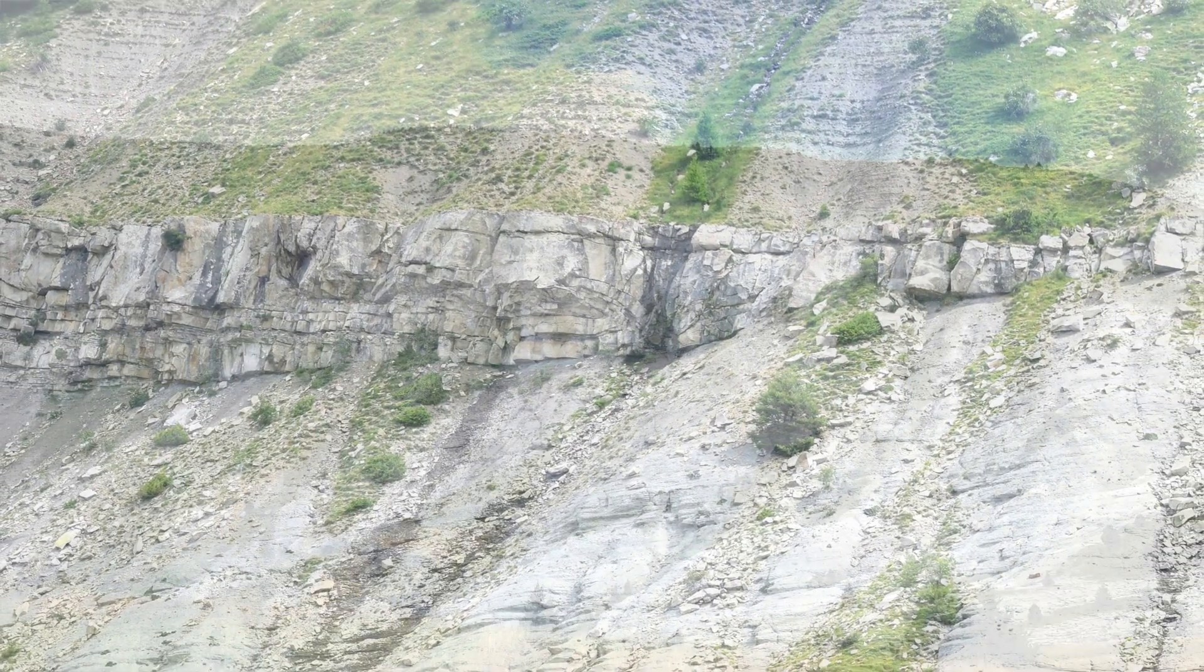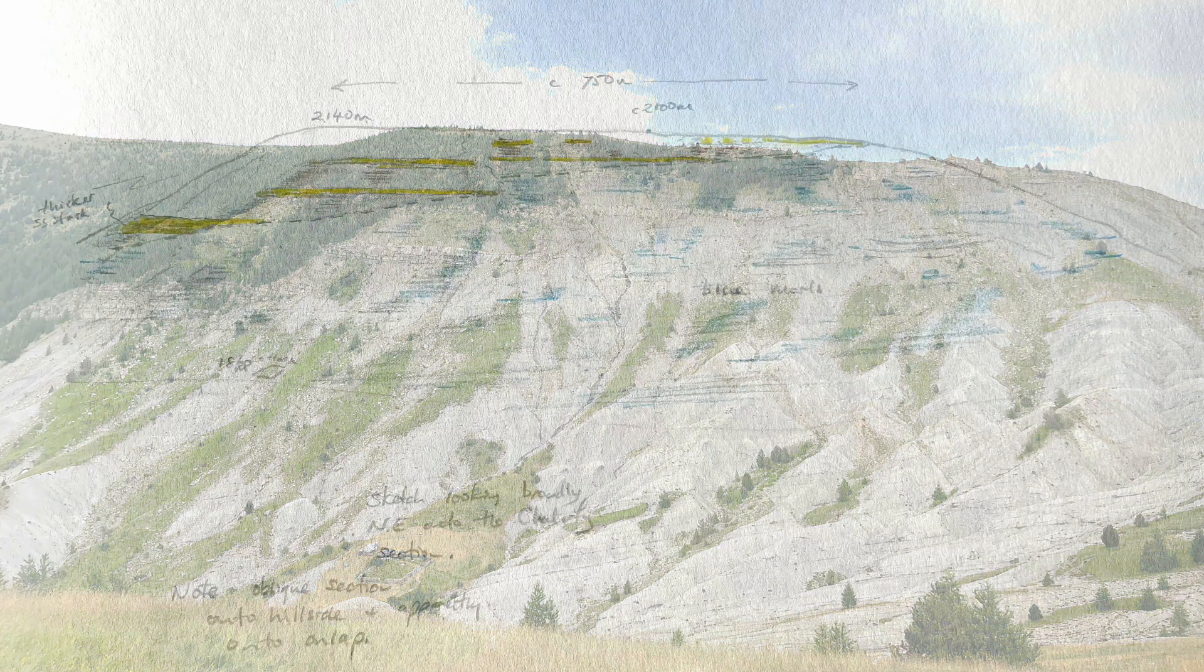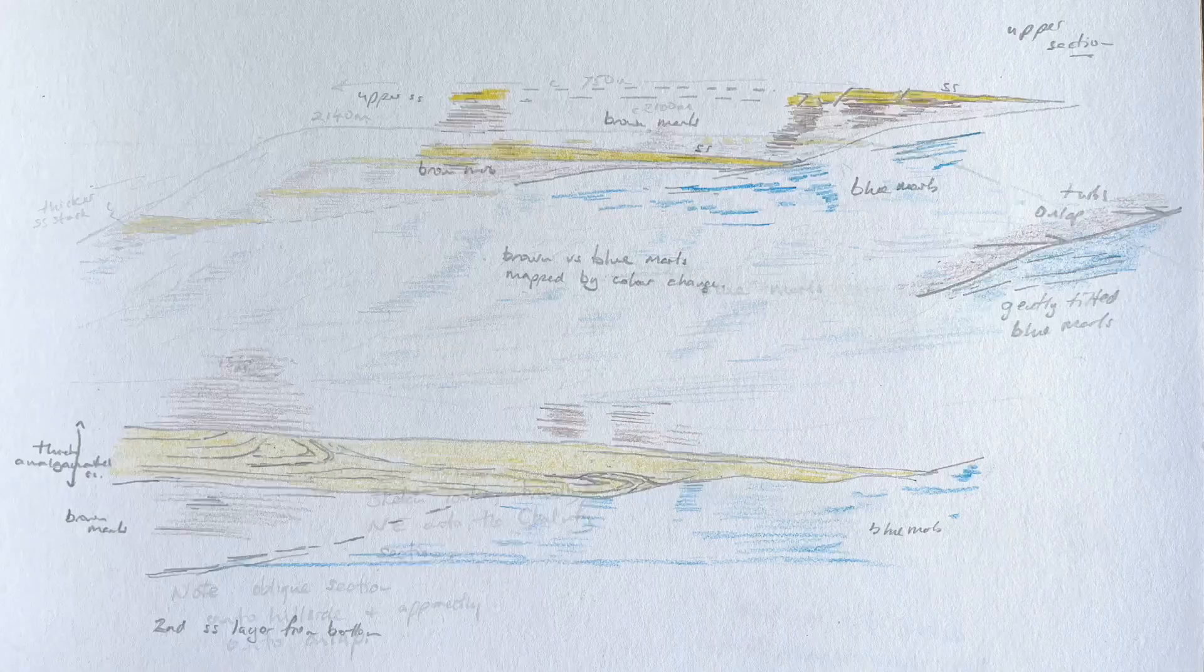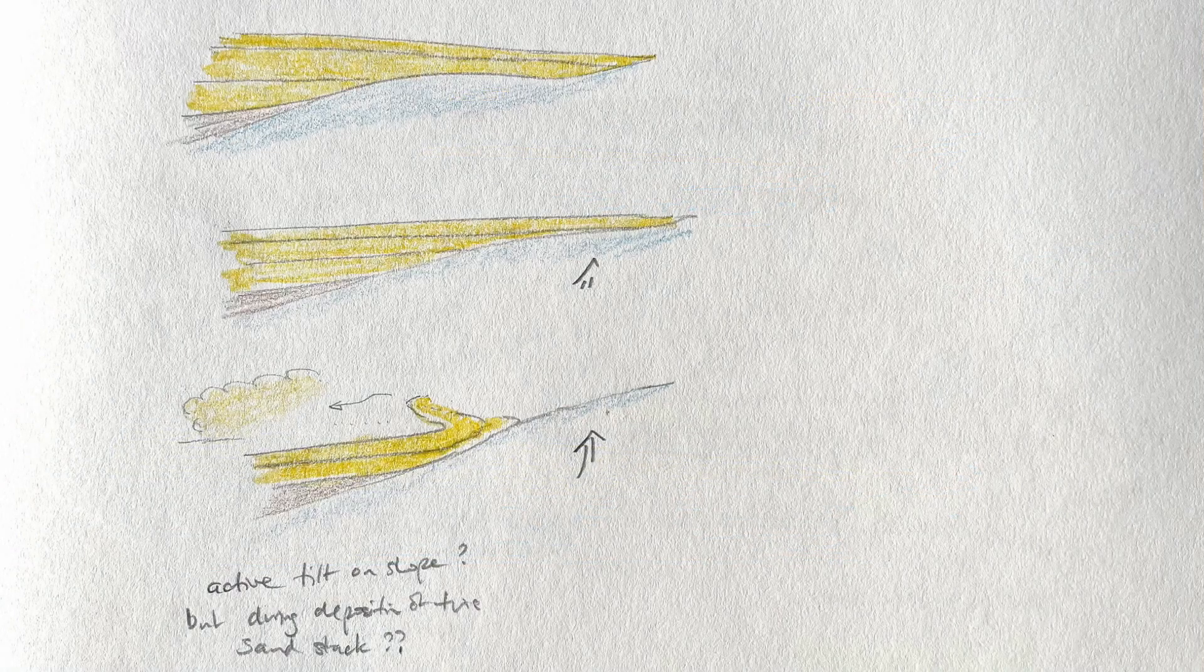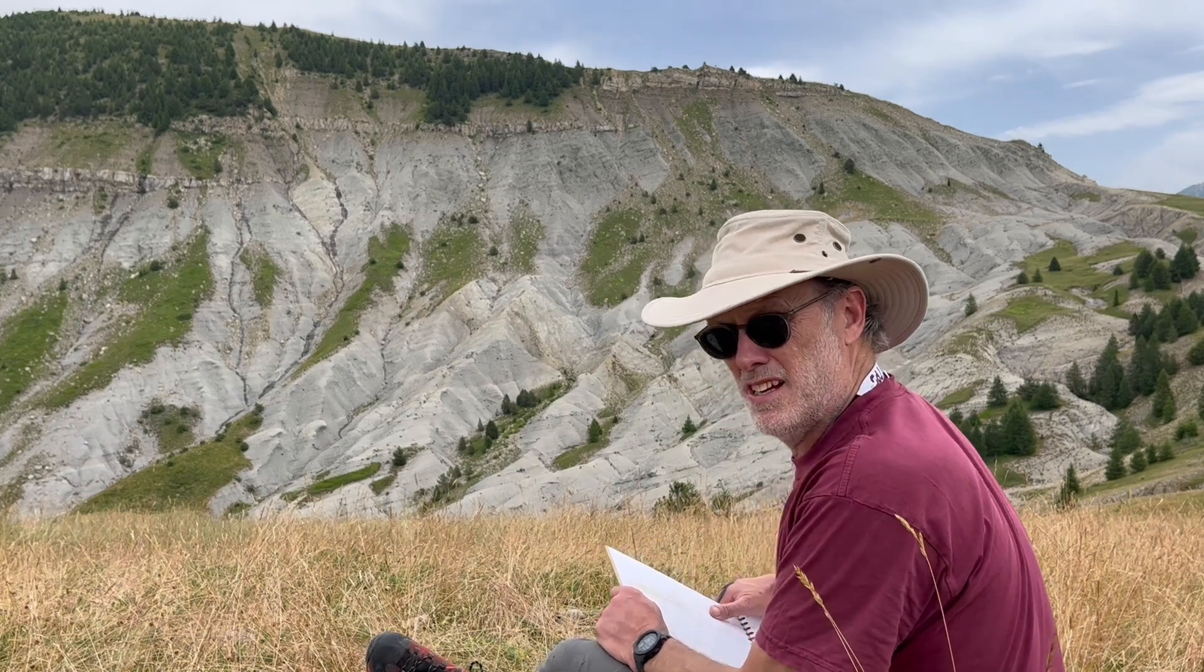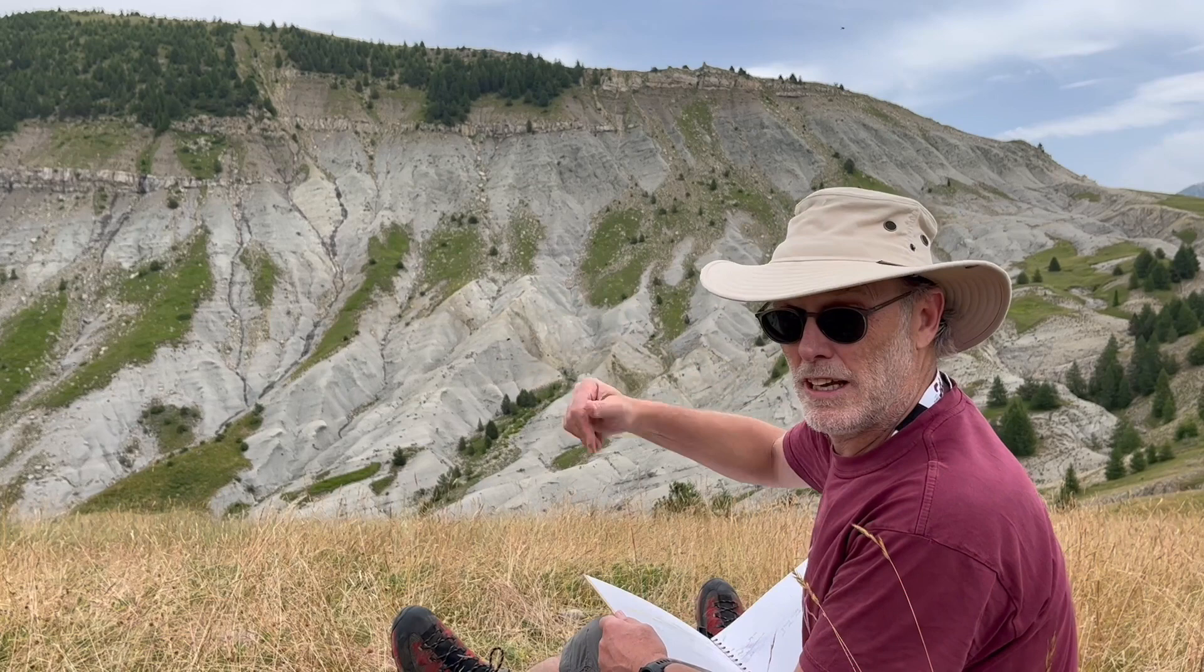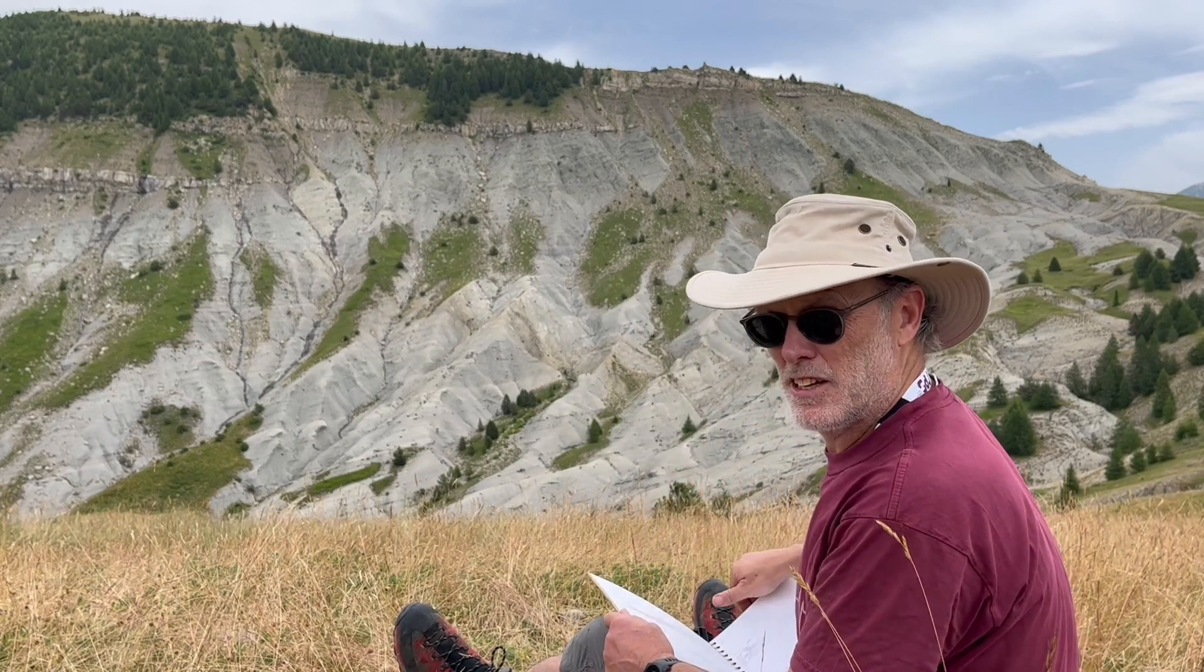So overall, deposition of turbidites up against a paleo slope. So these are the outcrop sketches that capture the critical geometries. Well that's some pretty spectacular lateral pinch out, onlap relationships. Really neat. Okay, let's get off the hill.